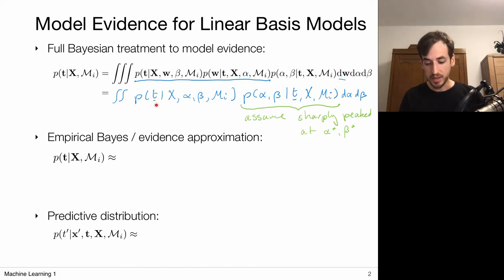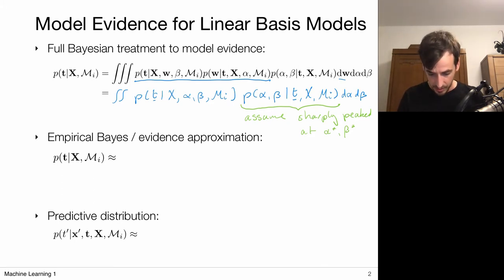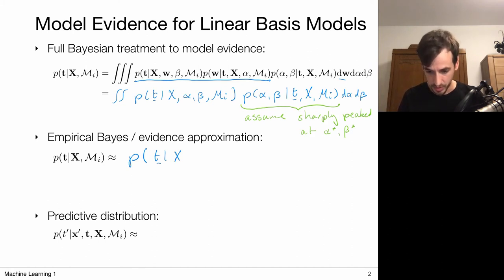Because the posterior is sharply peaked around alpha star and beta star, this means the integral really evaluates to the integrand evaluated at alpha star and beta star. Suppose this were a Dirac delta — then I'm only evaluating the expression at the place where the sharply peaked distribution is centered, which I assume to be alpha star and beta star. So my model evidence is approximated via my Bayesian predictive distribution, marginalized over W, evaluated at alpha star and beta star given model MI.